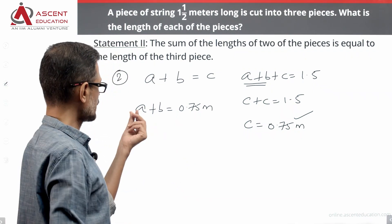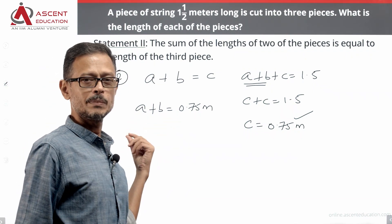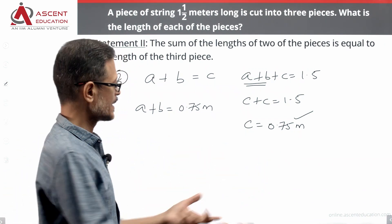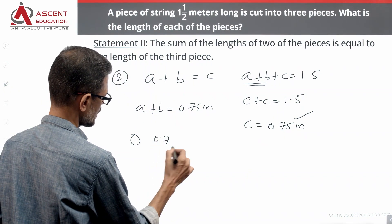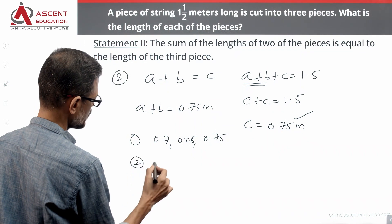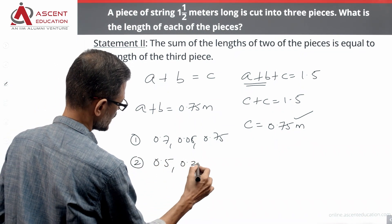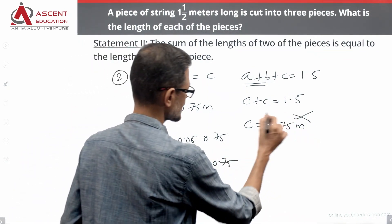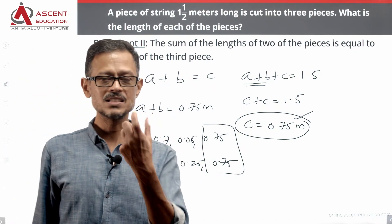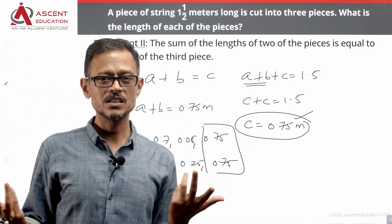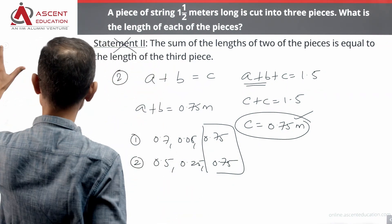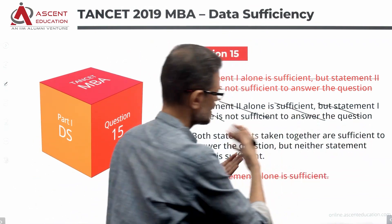While C is uniquely 0.75, A plus B together sum to 0.75 but individually could be 0.7 and 0.05, or 0.35 and 0.4, or 0.5 and 0.25 — multiple possibilities exist. Statement two alone is also not sufficient. Eliminate answer option B. The correct answer must be C.